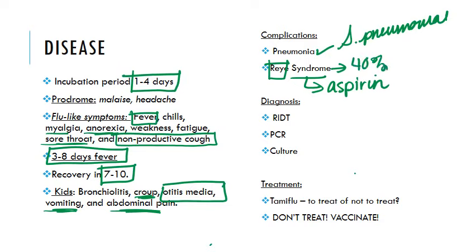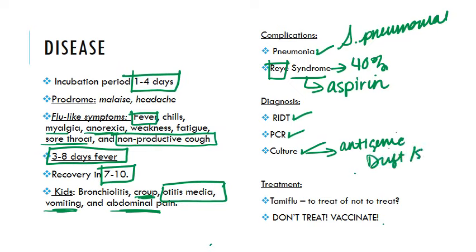For diagnosis, you can use the rapid influenza test or PCR. Each year, some samples are cultured so we can identify genes that might lead to antigenic drift or shift.